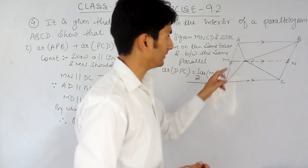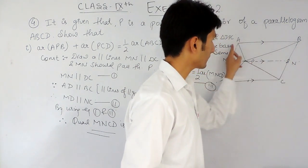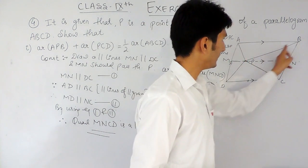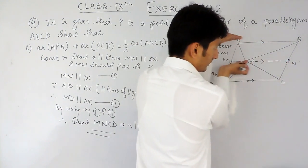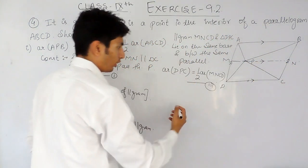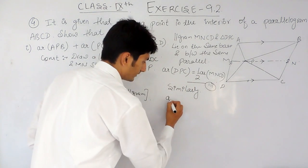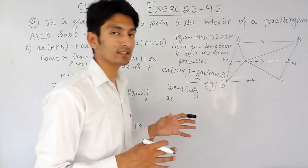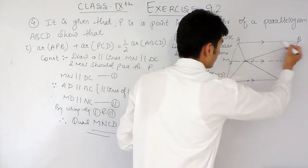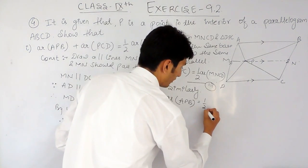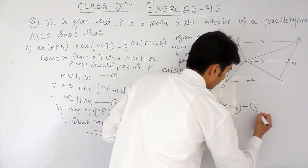Similarly, in quadrilateral AMNB, you can prove that this quadrilateral is also a parallelogram. Triangle APB and parallelogram AMNB lie on the same base AB and between the same parallels. Therefore, area of triangle APB equals half of area of parallelogram AMNB. This is our fourth equation.